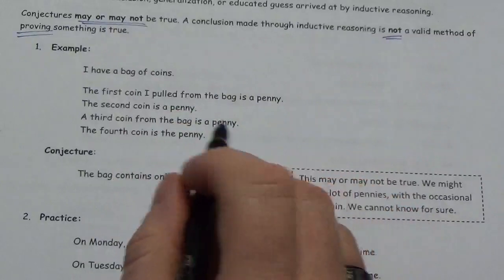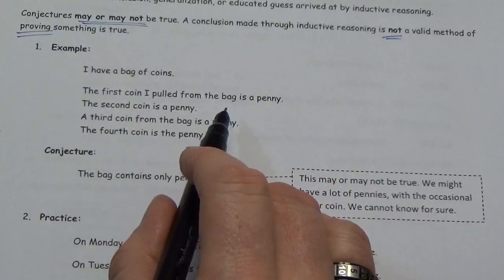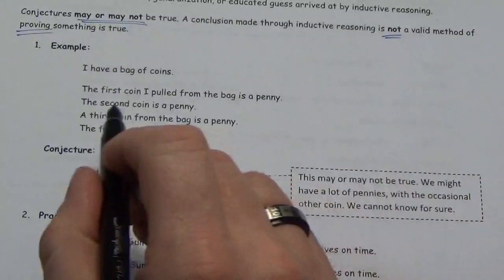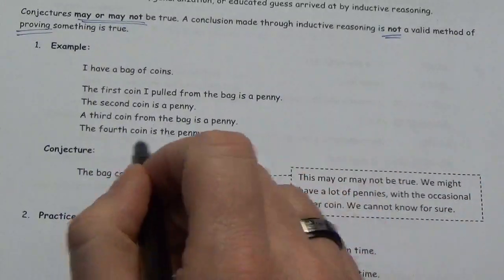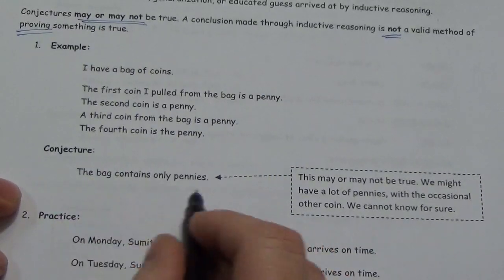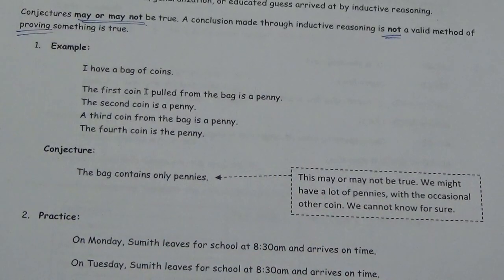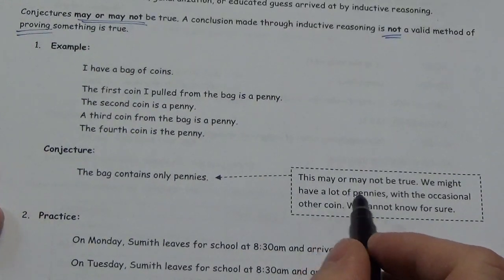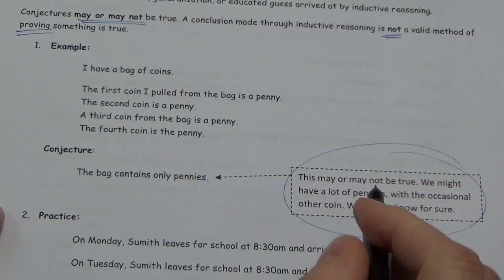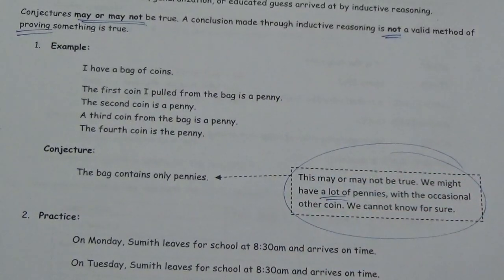Here's the example. I have a bag of coins. The first coin I pulled from the bag is a penny. The second coin I pulled is a penny. The third coin from the bag is a penny. The fourth is a penny. So, the conjecture might be that the bag contains only pennies. I mean, I pulled out four pennies, right? That's got to be what's going on. Well, not necessarily.